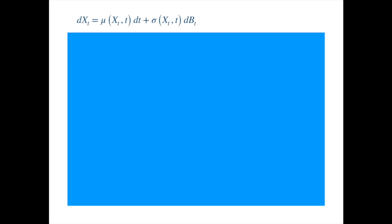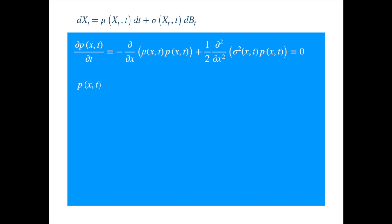We saw the Kolmogorov forward equation for this process is given by the following PDE. This PDE describes the dynamics of the conditional probability density. We have written the probability density as a function of x and t, though it is conditional on the initial value of the process. So this p represents the conditional probability density of the process going from x₀ at time t₀ to x at time t.